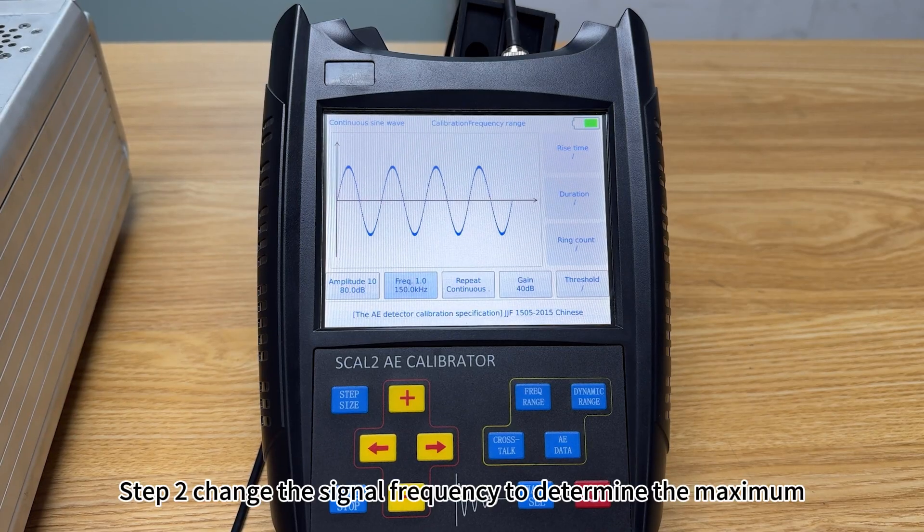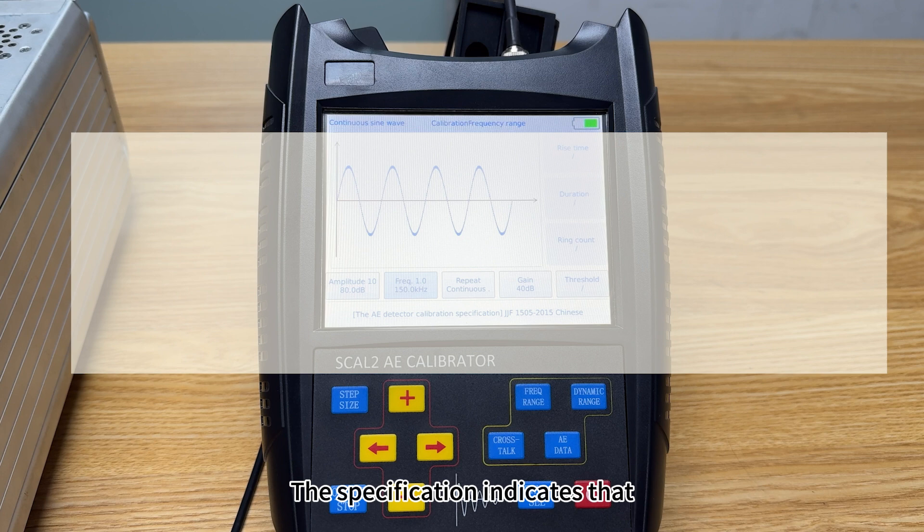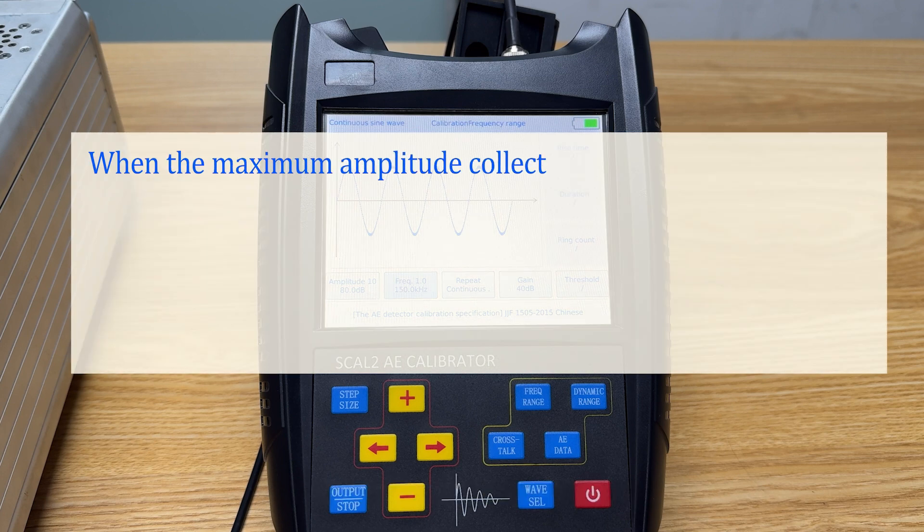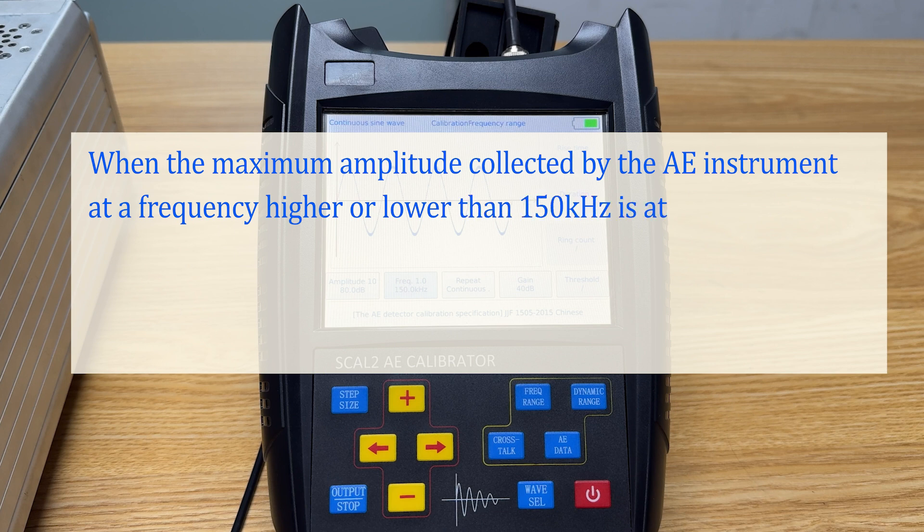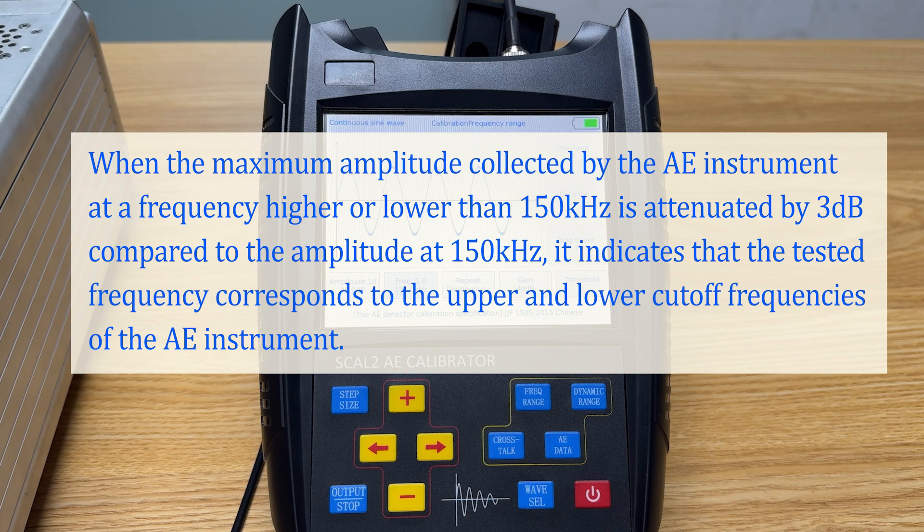Step 2, change the signal frequency to determine the maximum and minimum frequencies that the AE instrument can detect. The specification indicates that when the maximum amplitude collected by the AE instrument at a frequency higher or lower than 150 kHz is attenuated by 3 dB compared to the amplitude at 150 kHz, it indicates that the tested frequency corresponds to the upper and lower cutoff frequencies of the AE instrument.